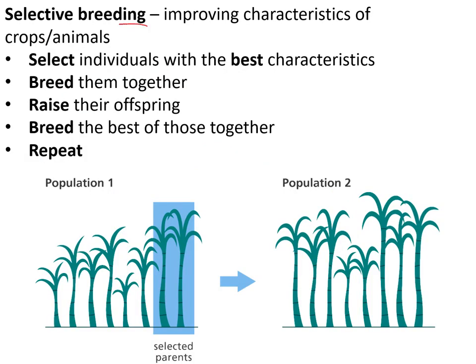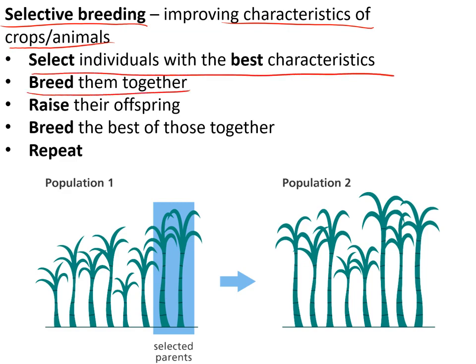Selective breeding is what farmers do to improve characteristics of crops or animals. You select the ones with the best characteristics, breed them together, raise their offspring, then select the best of those and breed again, repeating for many generations until you end up with a totally changed population.